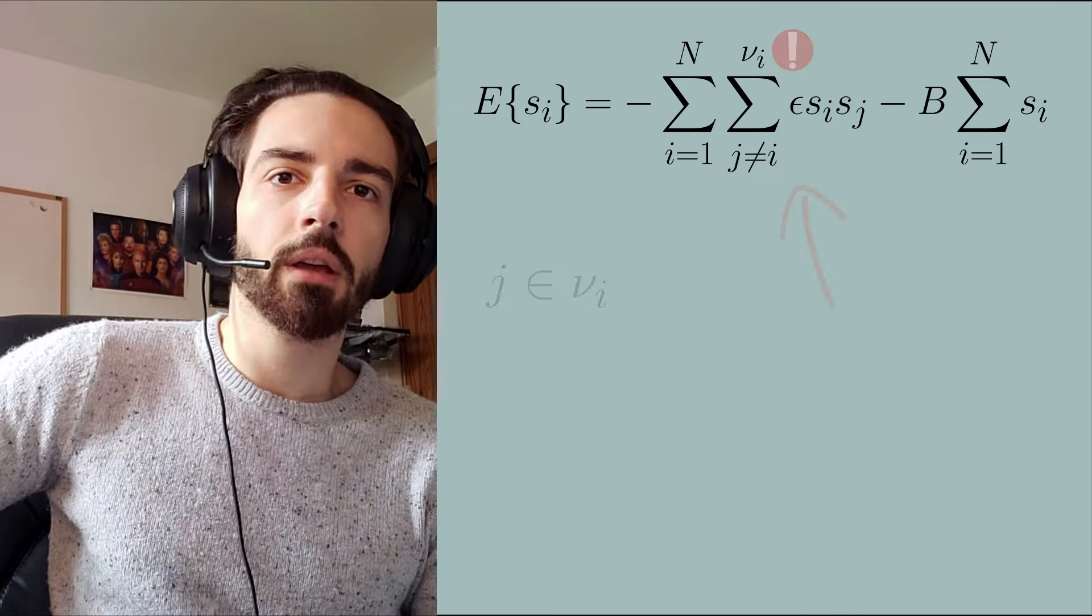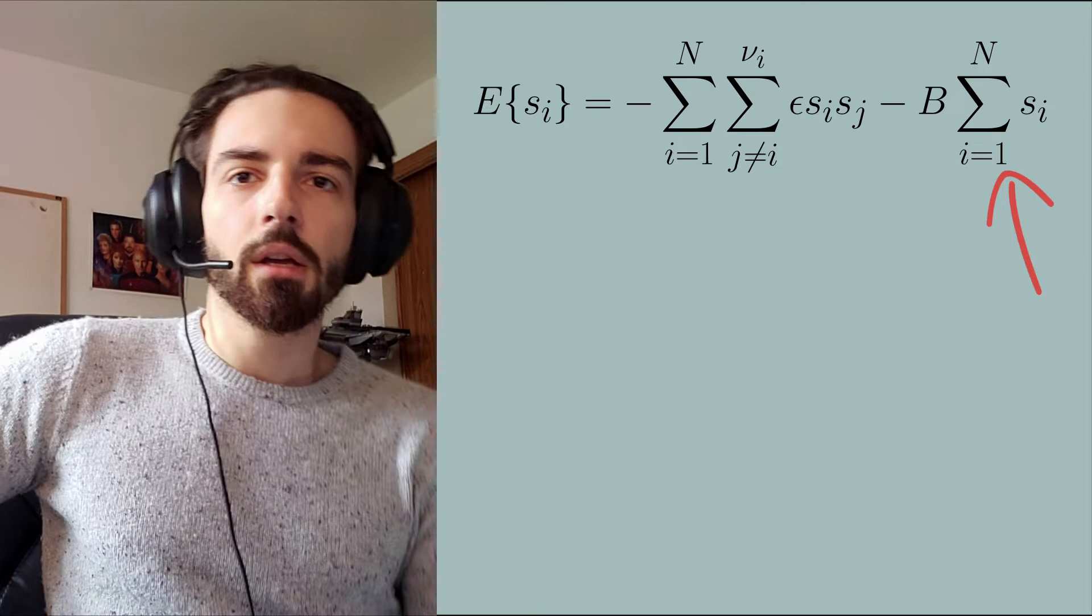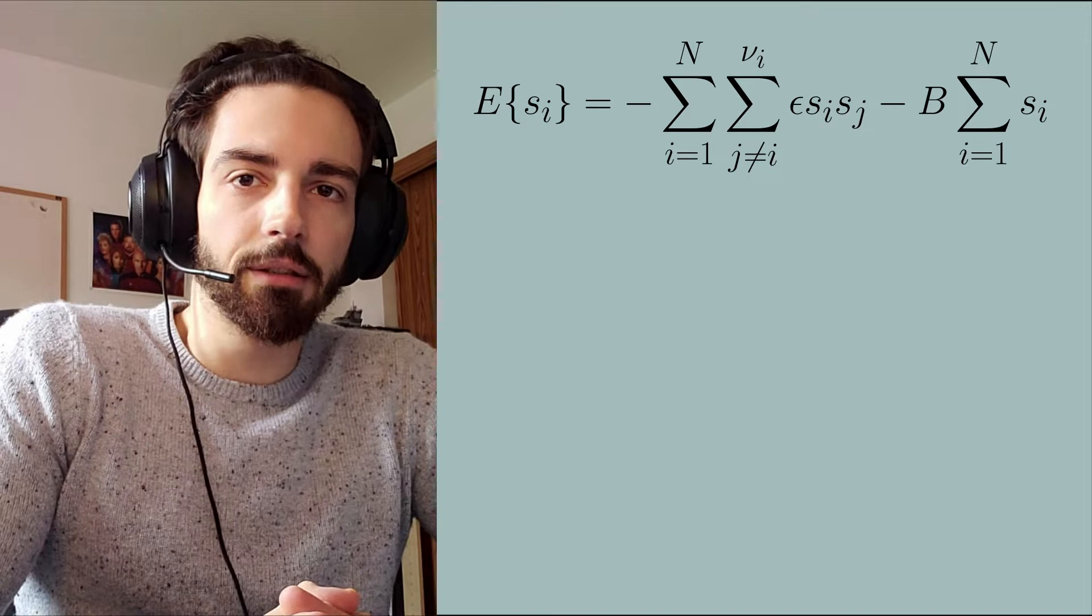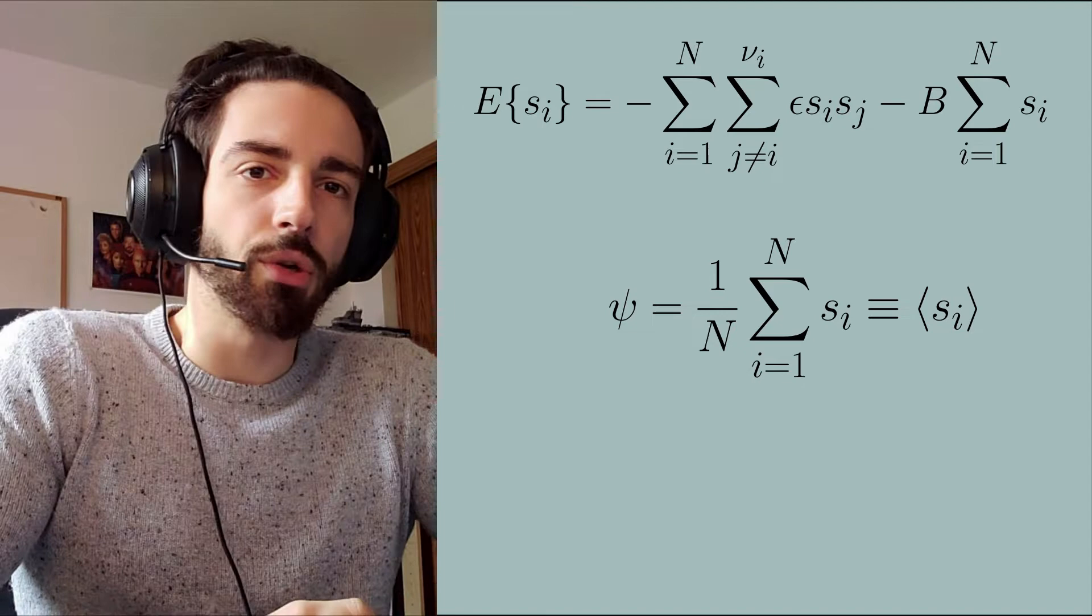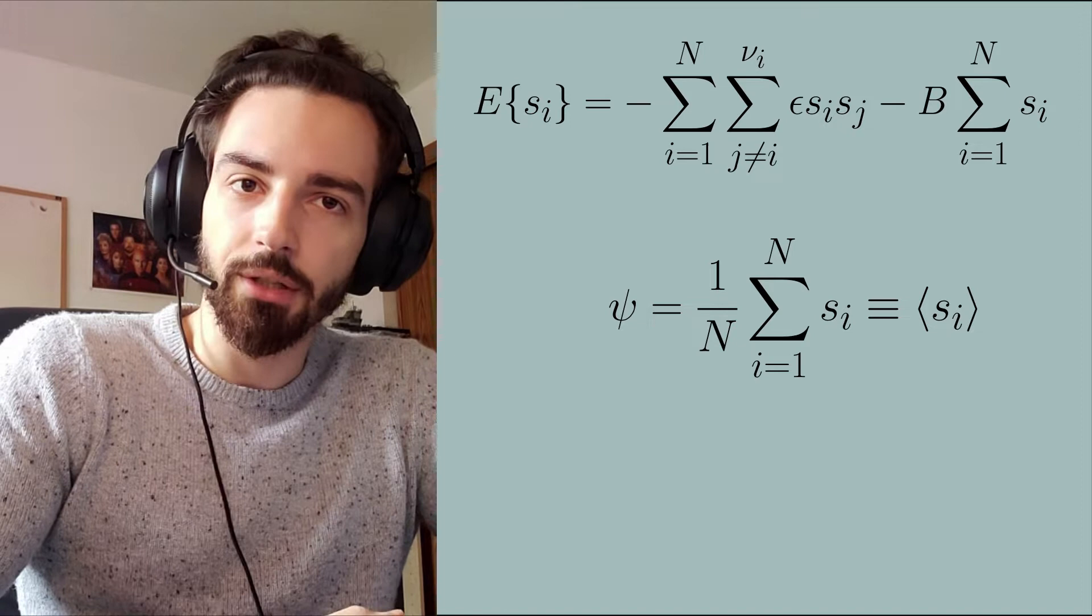And the second term accounts for the energy from the external magnetic field B. Now we want to assign some kind of value to represent the state of this system. The natural candidate is a value that measures the magnetization. Since we want to be general overall system sizes, we assign this variable to reflect the average magnetization over all sites. So this is done by summing all the spins and dividing by the total number of spins.